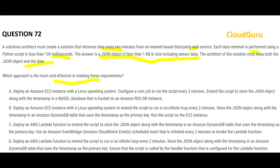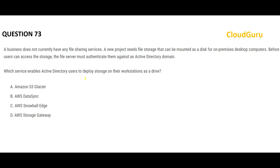Whenever cost-effectiveness is mentioned, the thumb rule is to think Lambda. Looking at the options, Lambda appears in options C and D, so A and B are ruled out. Option D says to extend the script to run in an infinite loop for two minutes — this won't work because Lambda times out at a maximum of 15 minutes and you cannot create a persistent infinite loop. Therefore, C is the correct answer.